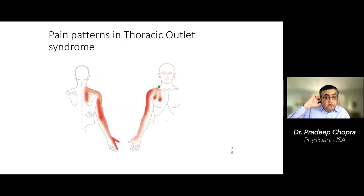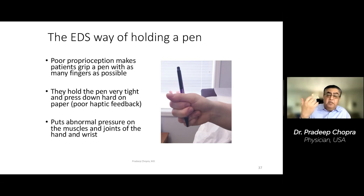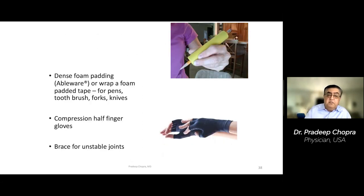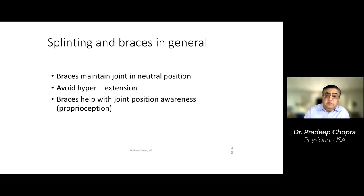This is what pain from thoracic outlet syndrome looks like — the nerve is pinched under the collarbone. Patients tend to have poor proprioception or joint position sense, so they hold things really tight, and their small hand muscles start to hurt. Because their fingers feel relaxed, they use even more force and tend to have pain in their dominant hand. Helpful options include fingerless compression gloves or ring splints, which can stabilize hyperlax joints.